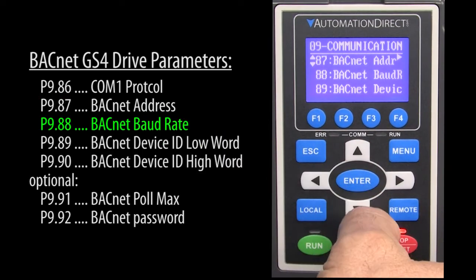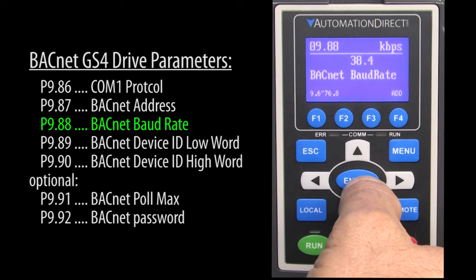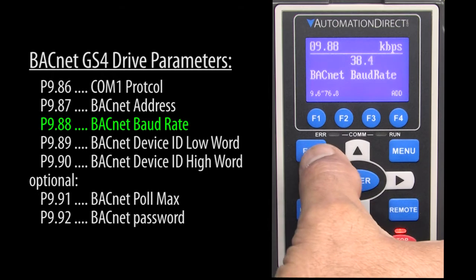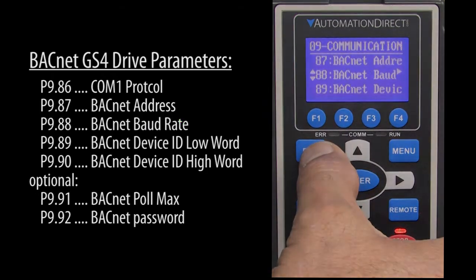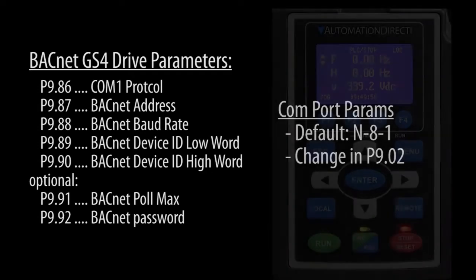Make sure the baud rate is what you need. Our USB to 485 converter we'll be using is set to 38.4k baud, so this is correct. The COM port parameter defaults to N81, but you can change that in parameter 9.02 if you need to.